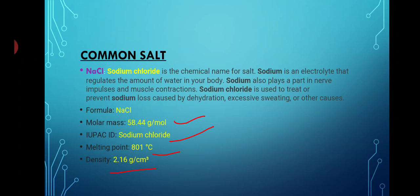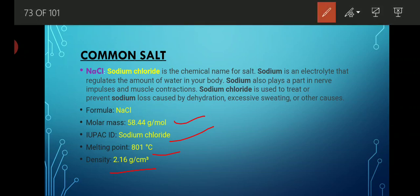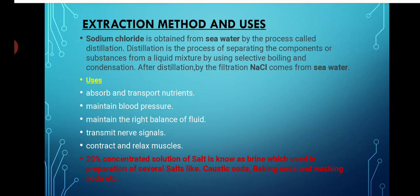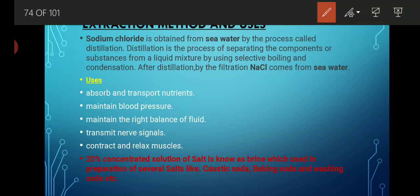Now let's see the extraction of common salt from sea water. We are studying common salt because with its help we can prepare many other chemical substances. Sodium chloride is naturally obtained from sea water by the process of evaporation followed by distillation. After evaporation, impurities like magnesium chloride, ammonium chloride, and magnesium carbonate are present along with sodium chloride. To get a purified form, it undergoes distillation, after which a fresh, pure form of sodium chloride is obtained.